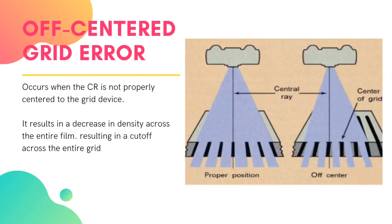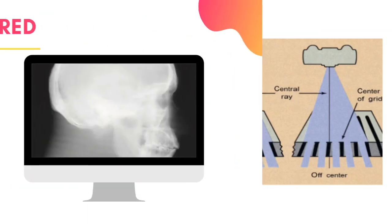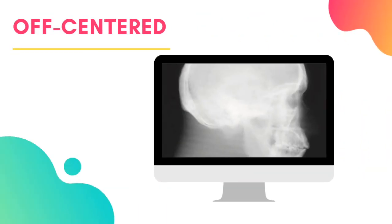The next grid error is called the off-center grid. It occurs when the central ray is not properly centered to the grid device, resulting in a decrease in density across the entire film and a cutoff across the entire grid. Because of the arrangement of the lead lines of the focused grid, the divergence of the primary beam does not match the angle of the lead strips when not centered. Off-center grid cutoff appears radiographically as an overall loss of density.